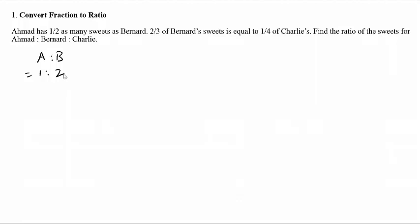That means Bernard has twice as many sweets as Ahmad. This is the ratio between Ahmad and Bernard. The question also says that 2 thirds of Bernard's sweets is equal to 1 quarter of Charlie's. When you meet this sort of scenario, your job is to make the numerator the same, because there's an equal sign in the middle, so I need to make sure that this number and this number here are the same.